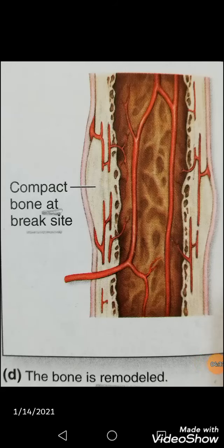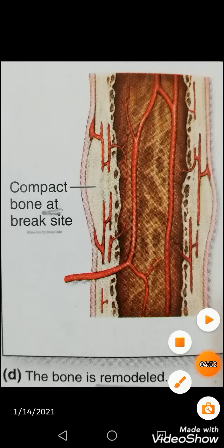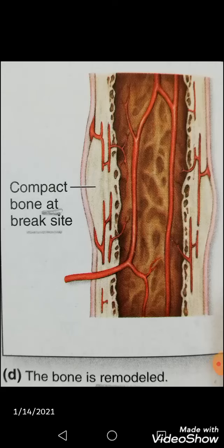In this diagram, the woven bone is now remodeled as compact and cancellous bone in continuity with the adjacent uninjured area, and it is now fully functional, showing re-established vasculature. Various stresses put on the bone during repair as the patient returns to routine activity drive remodeling of the bony callus. The immature woven bone is gradually resolved and replaced by compact lamellar bone, restoring the original bone structure.